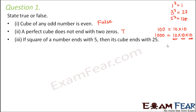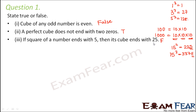For example, 15 squared is 225, so the square of 15 ends in 5. But 15 cubed is 3375, which also ends in 5 but not 25. So: the square of a number ending with 5 ends with 5, and the cube of a number ending with 5 also ends with 5 — not necessarily 25.